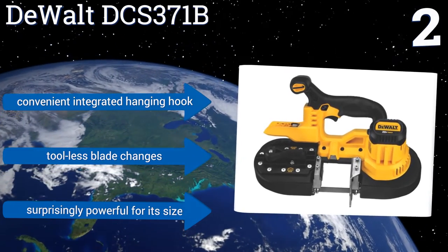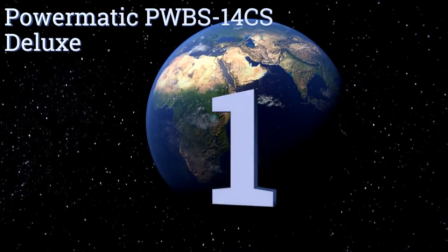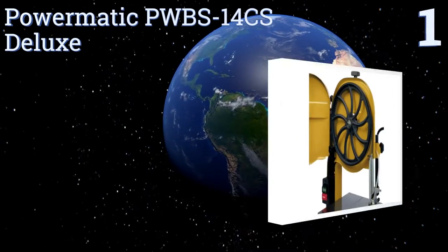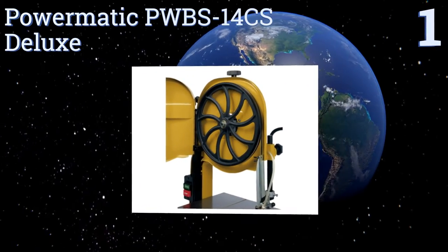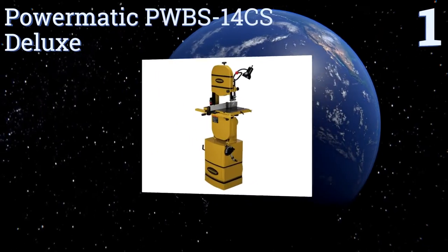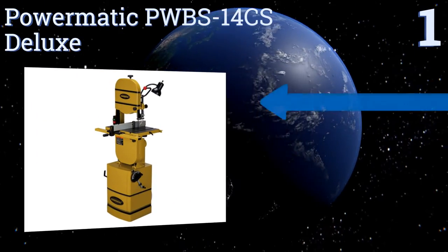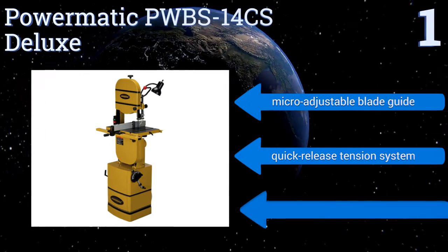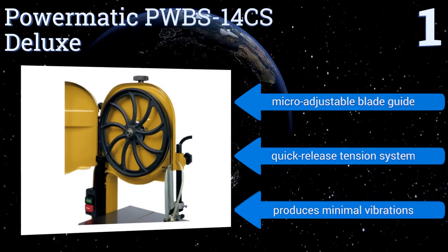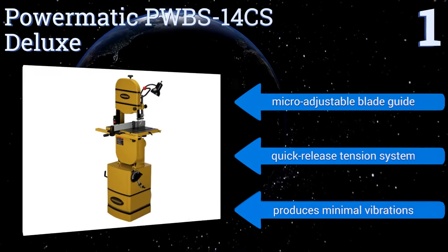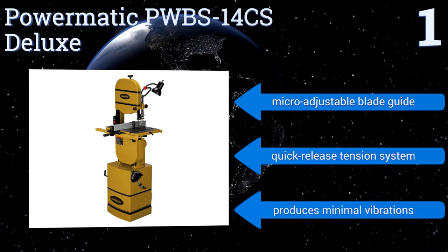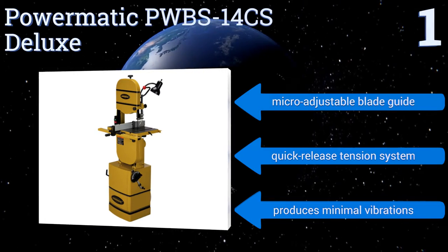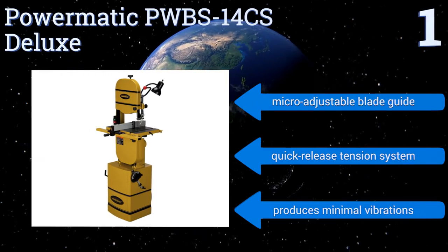And coming in at number 1 on our list, the Powermatic PWBS-14CS Deluxe has an integrated air pump to clear away chips of wood as you saw, ensuring you can always clearly see and cut exactly what you want to. It features a 1.5-horsepower motor, a tilting table, and a combination of steel and cast iron construction. It also boasts a micro-adjustable blade guide and a quick-release tension system. It produces minimal vibrations.